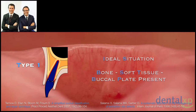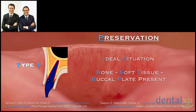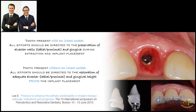We need to think about how to diagnose Type 1, Type 2, and Type 3, and how to approach each. The main goal in a Type 1 scenario is to preserve and maintain what nature gave us, utilizing all possible procedures to achieve this. In Type 2 and Type 3 scenarios — where a tooth is present but without an intact socket — all efforts should be directed toward restoring adequate alveolar and gingival height before placing the implant. Today we will focus mainly on Type 1 clinical scenarios.